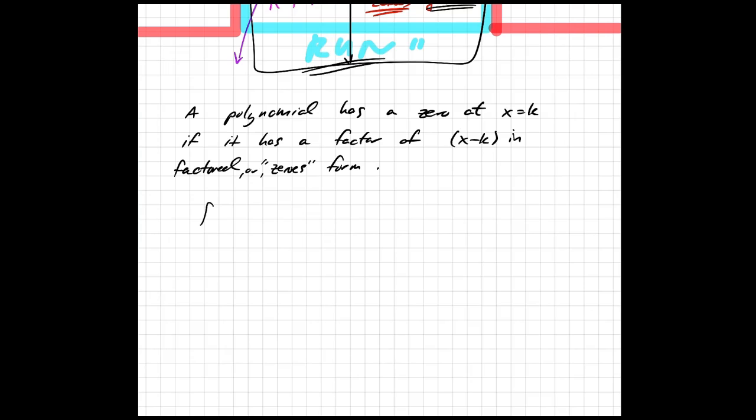So in other words, if we can rewrite this function as x minus k₁ times x minus k₂, or to make things a little bit more concrete, if f(x) = 4(x - 2)(x - 5), we know that this function f has a zero at x equals 2 and x equals 5.